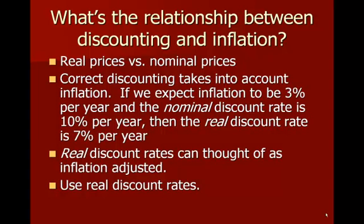Correct discounting always takes into account inflation. So if we expect inflation to be 3% per year and the nominal discount rate is 10%, then the real discount rate would only be 7%. You take the nominal rate, you subtract off the expected inflation, and you get the real discount rate.